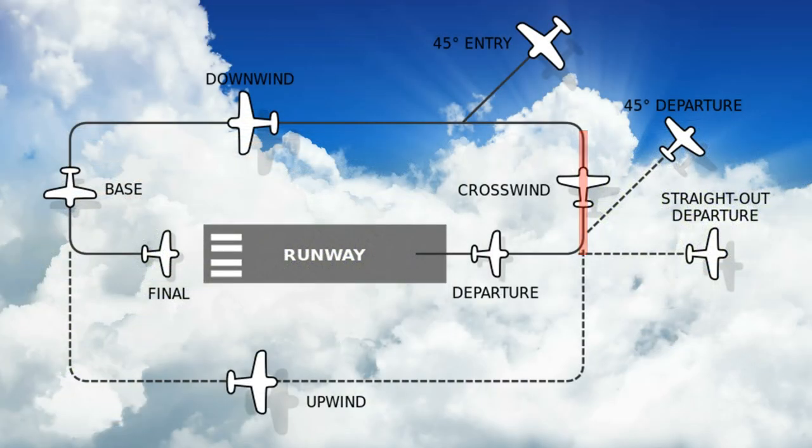We'll continue climbing on the crosswind leg until the aircraft's tail is just in line with the runway centre line, at which point it will be time to turn onto the downwind leg — 90 degrees to the left onto a heading of 270. Roughly during the turn onto downwind the aircraft should be reaching about 1,000 feet above aerodrome elevation. At that point we'll level off, trim for level flight, allow the speed to accelerate up to 90 knots, and then reduce power to maintain 90 knots on the downwind leg. Once on downwind we'll carry out our before-landing checklist and call downwind on frequency.